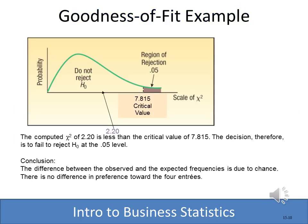Using the graph to compare the critical value to the chi-square we computed, we can see that 2.2 falls in the do-not-reject region. Therefore, we conclude that even though we saw some minor differences in the preferences, at the 0.05 significance level we cannot conclude that there is a significant difference.